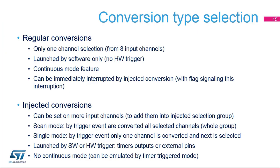Regular conversions have less priority and can be interrupted by an injected conversion. If a regular conversion was interrupted, it is restarted once the injected conversion is finished, and this interruption is indicated as a flag. Regular conversions can be launched only by software with no scan mode available. They can run in continuous mode with no channel switching, and in fast mode without filter refill. Regular conversions are used for measurements where timing is not critical, for example measuring temperatures or slow signals, or for continuous conversions from one channel such as audio or energy measurement applications.